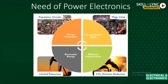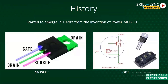Now let us look at the history. The power electronics field started to emerge in the late 1970s with the invention of the power MOSFET. Before that, transistors were used more at logic levels, and power density was very low — even logic circuits used large-size components. Only after the invention of the power MOSFET in the 1970s did power electronics really start to emerge.